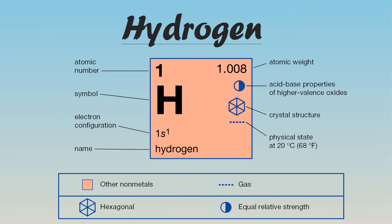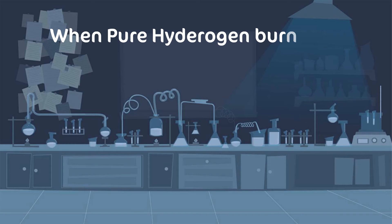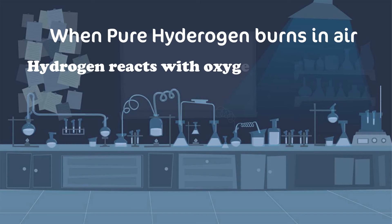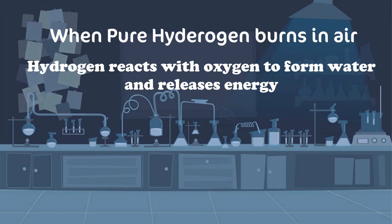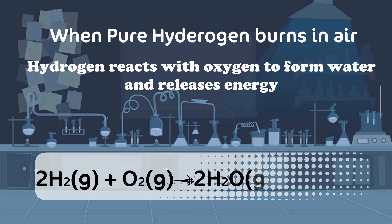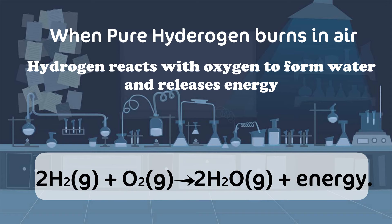Hydrogen is found in the first group and first period in the periodic table, meaning it is the lightest and first element on the periodic table. Since the weight of hydrogen is less than air, it rises in the atmosphere and is therefore rarely found in its pure form, H2. In a flame of pure hydrogen gas burning in air, the hydrogen H2 reacts with oxygen O2 to form water H2O and releases energy: 2H2 gas + O2 gas gives 2H2O gas vapor plus energy.